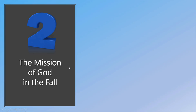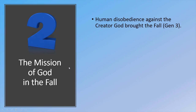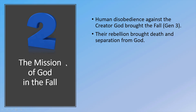The mission of God in the fall. Human disobedience against the creator God brought the fall, as we see in Genesis 3. The moment Adam and Eve ate of the forbidden fruit, sin entered the world when they rebelled against God and his purposes. Their rebellion brought death and separation from God — they were cast out of the Garden of Eden. Sin spread and became the root of all the problems humans face even today.